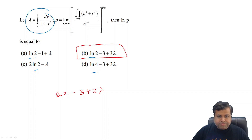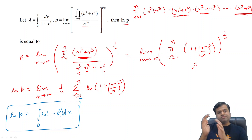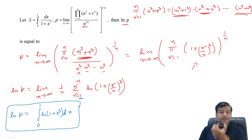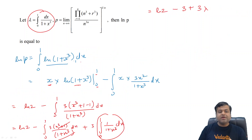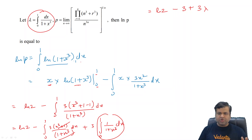So our final answer is ln p = ln 2 minus 3 plus 3 lambda. This is clearly option B, which is the correct answer. To summarize, this question required three key ideas: first, taking log to convert the product into a summation; second, converting the summation limit into a definite integral; and third, using integration by parts to evaluate the integral. This type of question is very important for ISI.